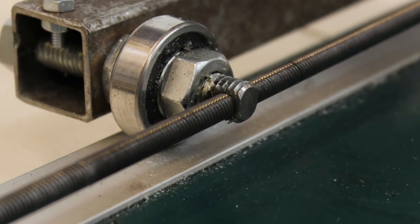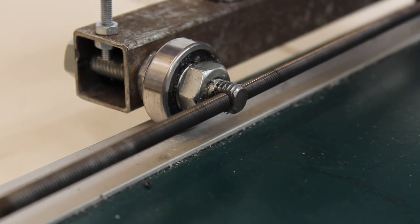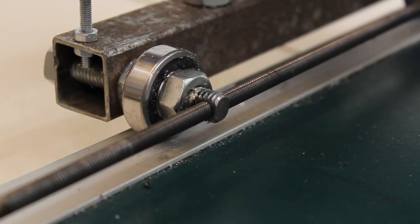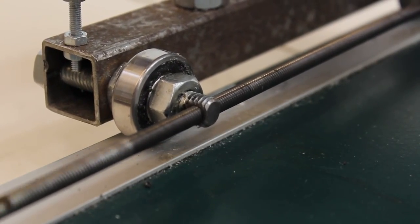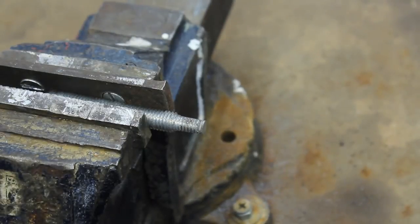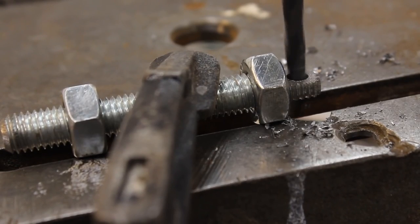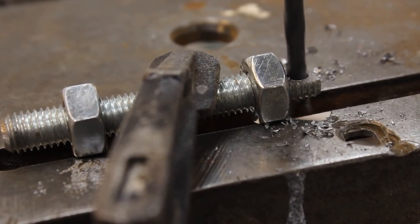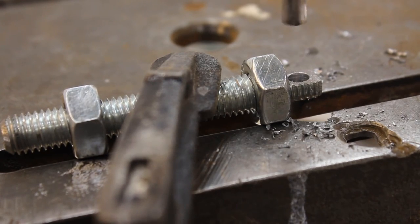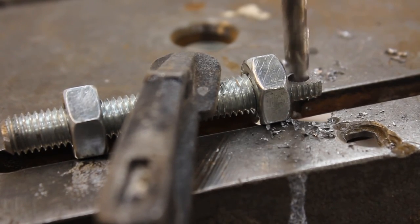The axes are driven through 6mm threaded bars. We need some 10mm bolts with a 6mm thread at one end. To get that, the 10mm bolt has to be filed flat on two opposite sides. Now a 5mm hole is drilled. Counterbore the hole with a 6mm drill.